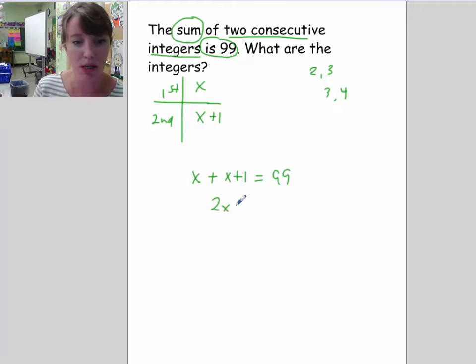x plus x is 2x plus 1 is equal to 99. Subtract 1 from both sides. We have 2x is equal to 98. Divide both sides by 2. We have x is equal to 49.